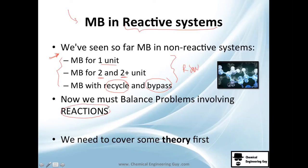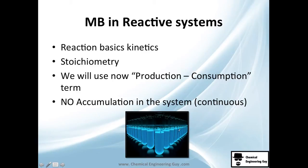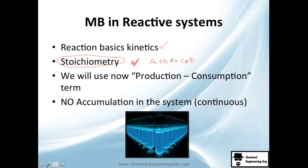Now we want to do mass balance with reactions, and this is way more interesting. First we'll cover some theory. Reaction basics and kinetics — you don't need to know that much, just have an idea. Stoichiometry is the most important part. You do need to know it, because stoichiometry is the relationship between species. If you have two of B you produce three of C — it's the relationship between matter, atoms, and molecules. Make sure you know it.